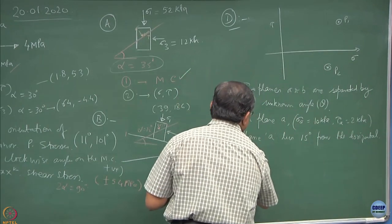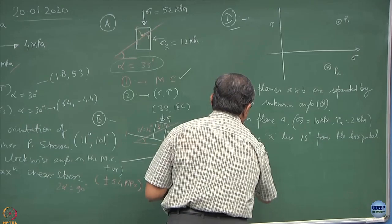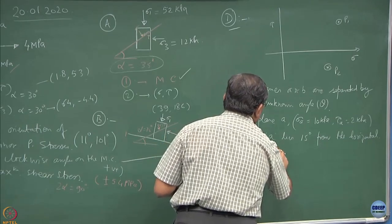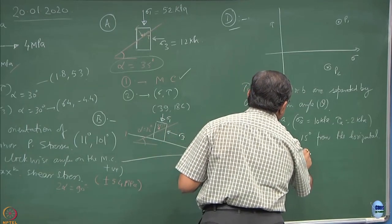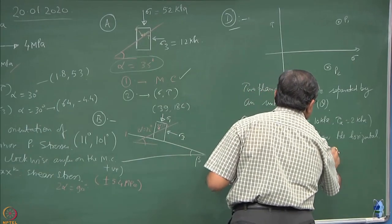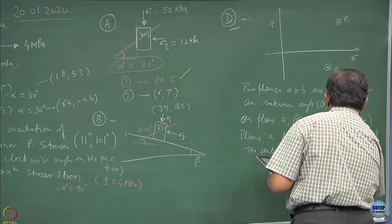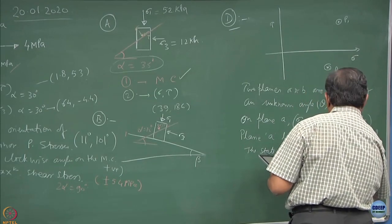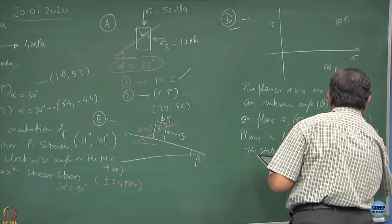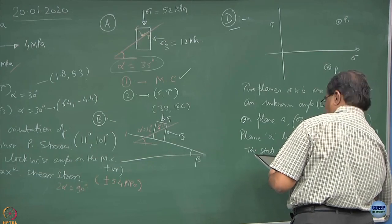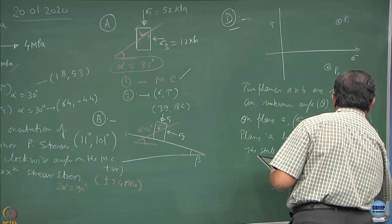The state of stress at point B, sigma B is equal to 9 kPa and tau B equal to minus 3 kPa.